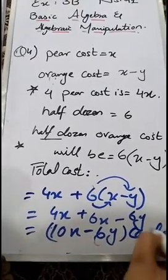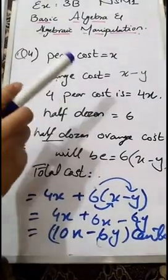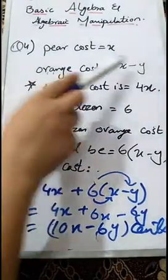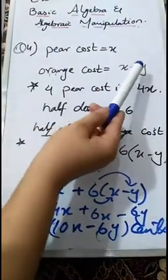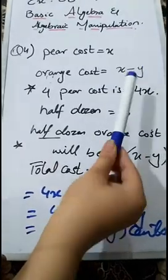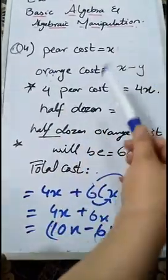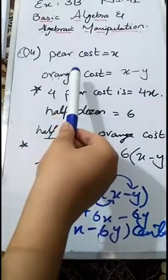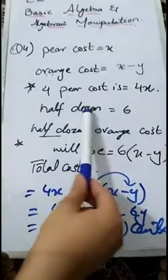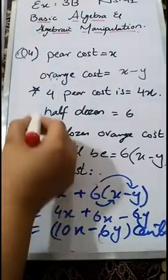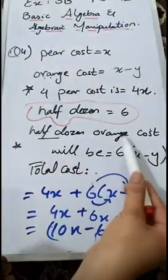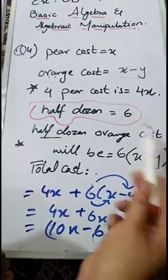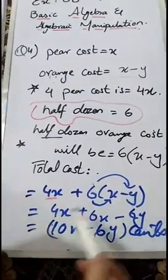The unit is given in cents as stated in the word problem. To explain again: the pear cost is x, so we assign the variable x to the pear cost. The orange cost is y less than the pear, so we subtract y from the pear cost — orange cost equals x minus y. The 4 pear cost: as 1 pear costs x, so 4 pears cost 4x. Half a dozen means 6, so half dozen orange cost means 6 times the cost of 1 orange, which is 6(x minus y). At the end, we find the sum of 4 pears and 6 oranges and simplify the expression.